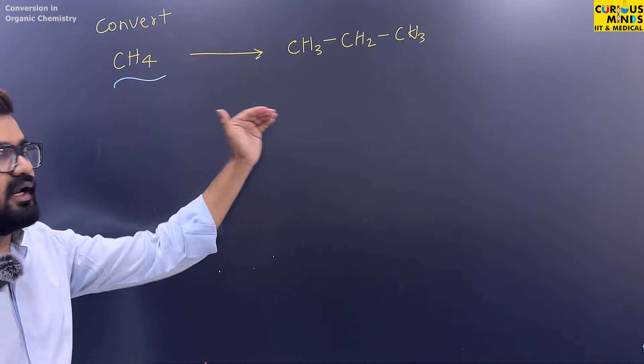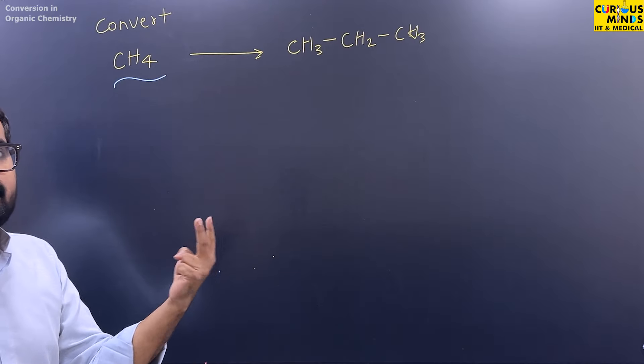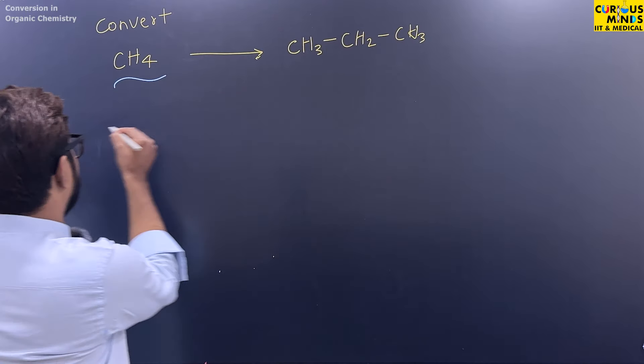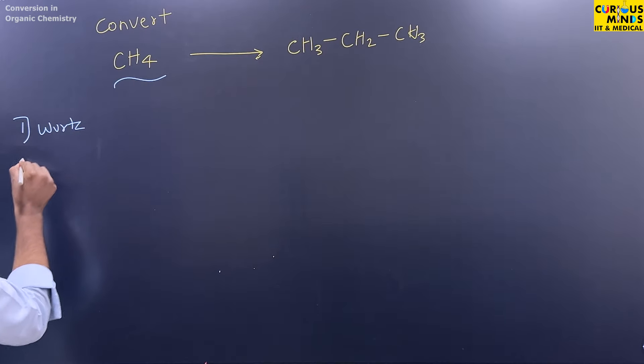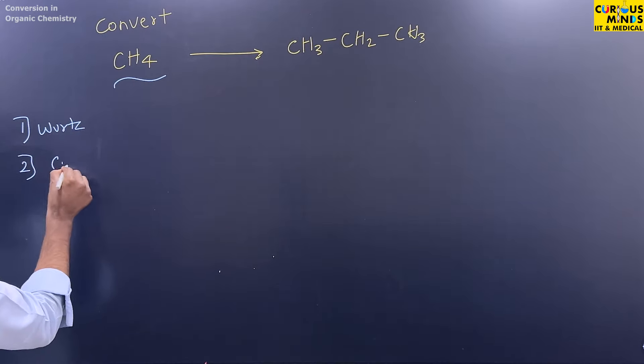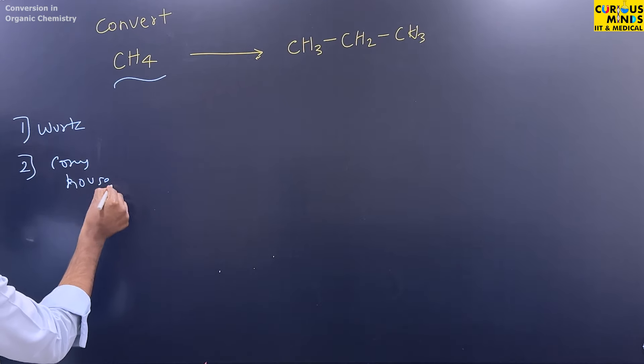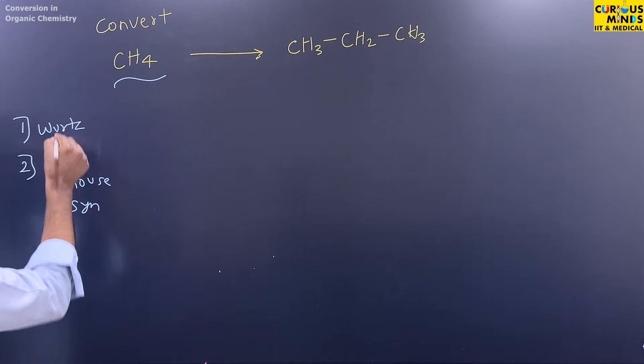So when you have to increment in carbon chain, you have to remember two names. First, you have to remember Wurtz reaction. And second, you have to remember Corey-House synthesis. Now Wurtz reaction is for even number of carbon chain.